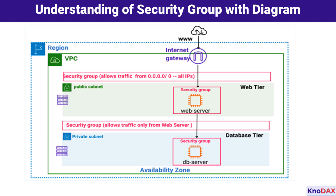Now let's look at the database tier hosted in a private subnet. The database instance has a separate security group, configured to allow traffic only from the web server's security group. This approach ensures that only authorized traffic from the web server can access the database. By placing the database instance in a private subnet, it remains isolated from the internet, further protecting sensitive data.